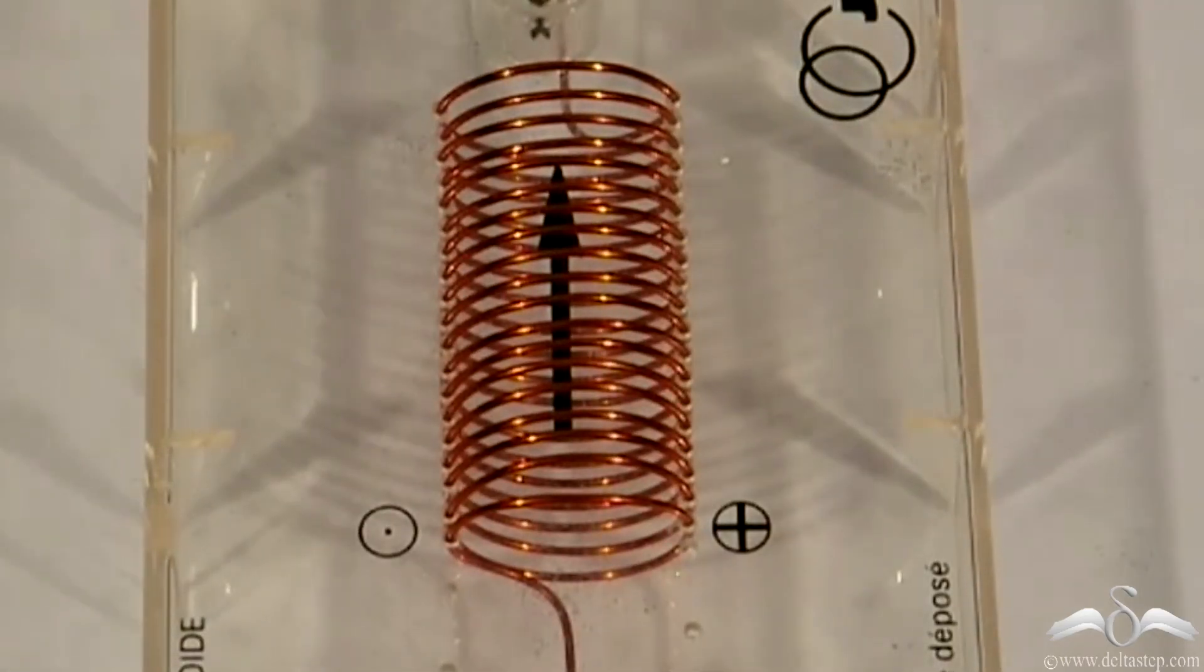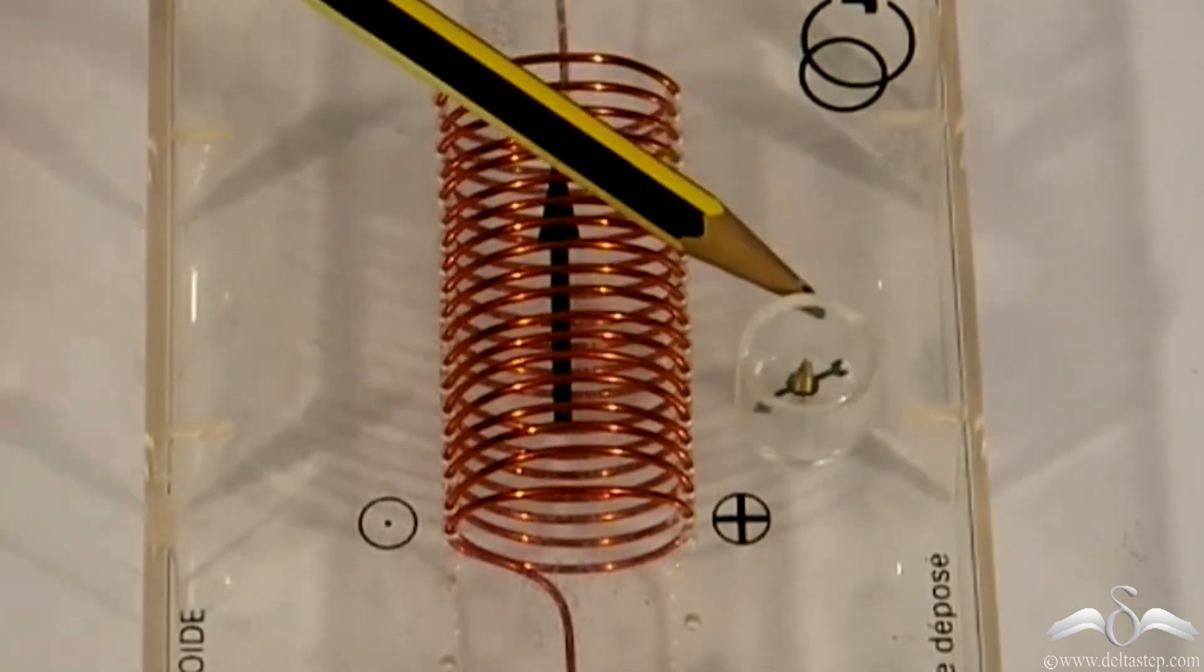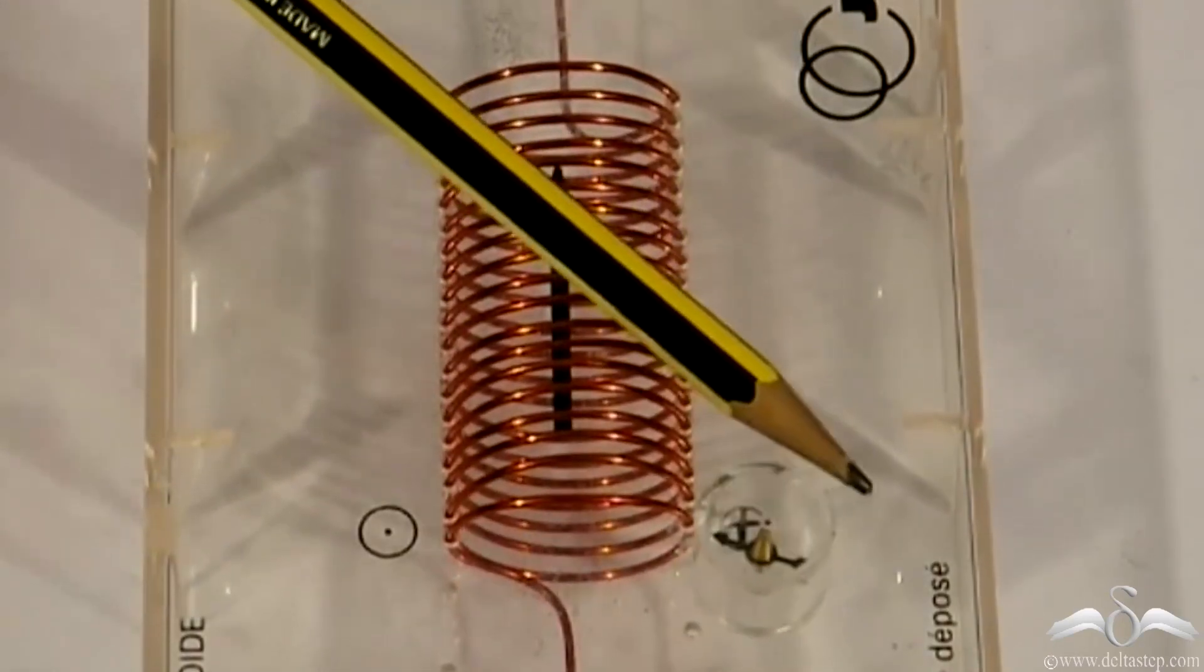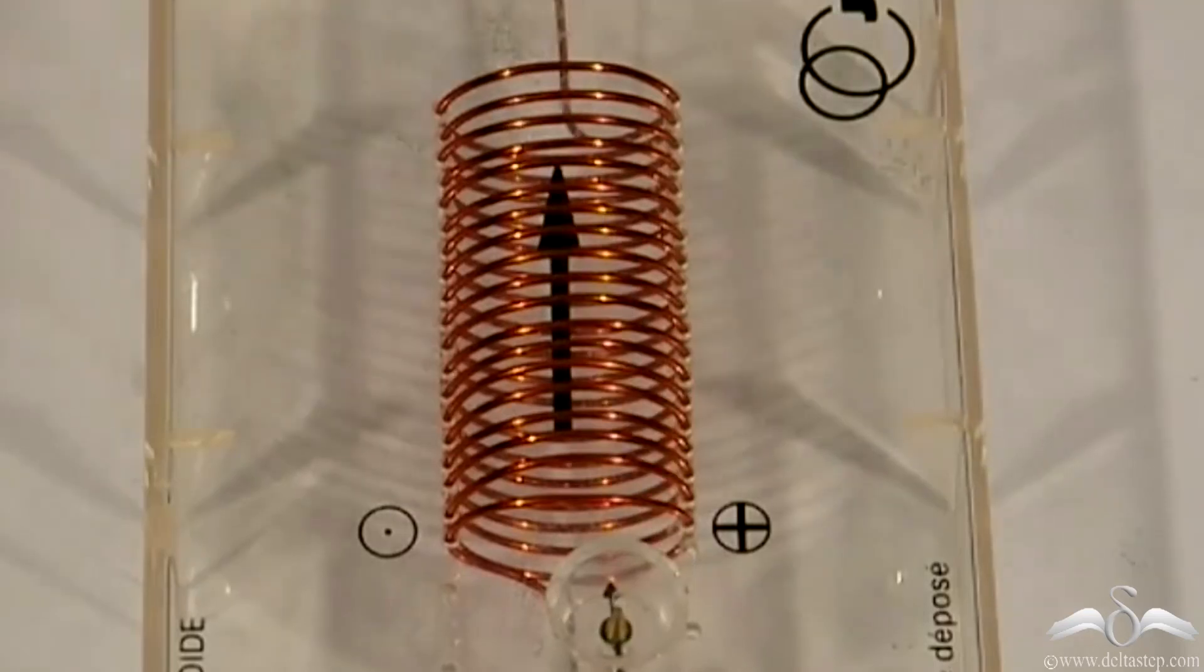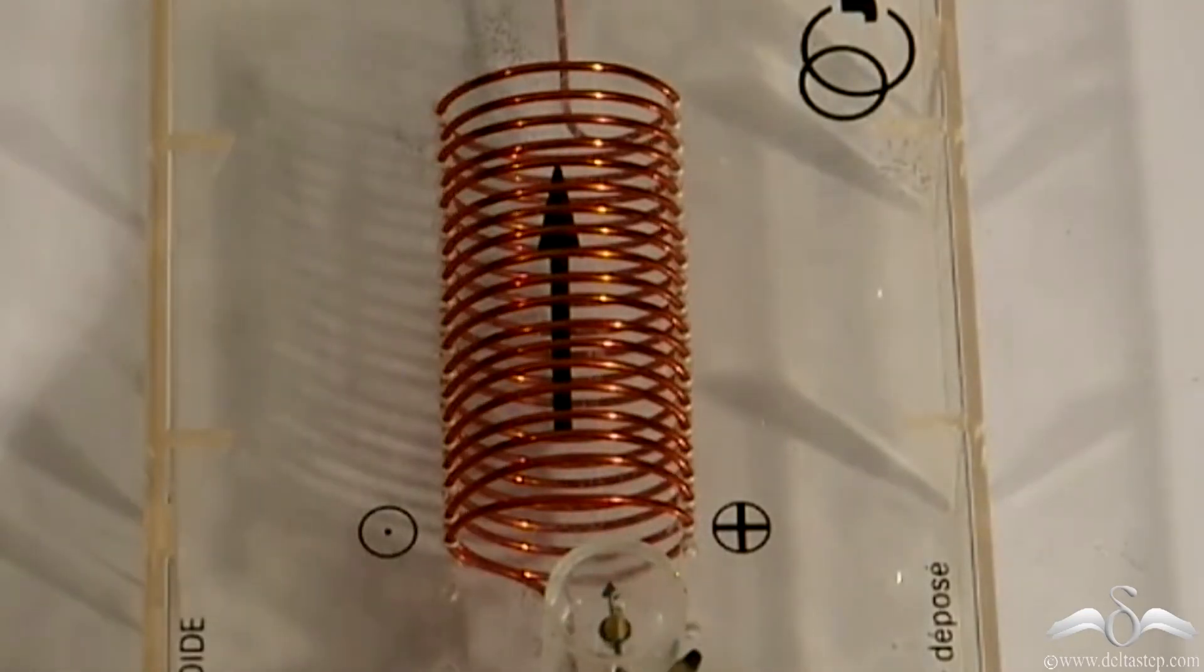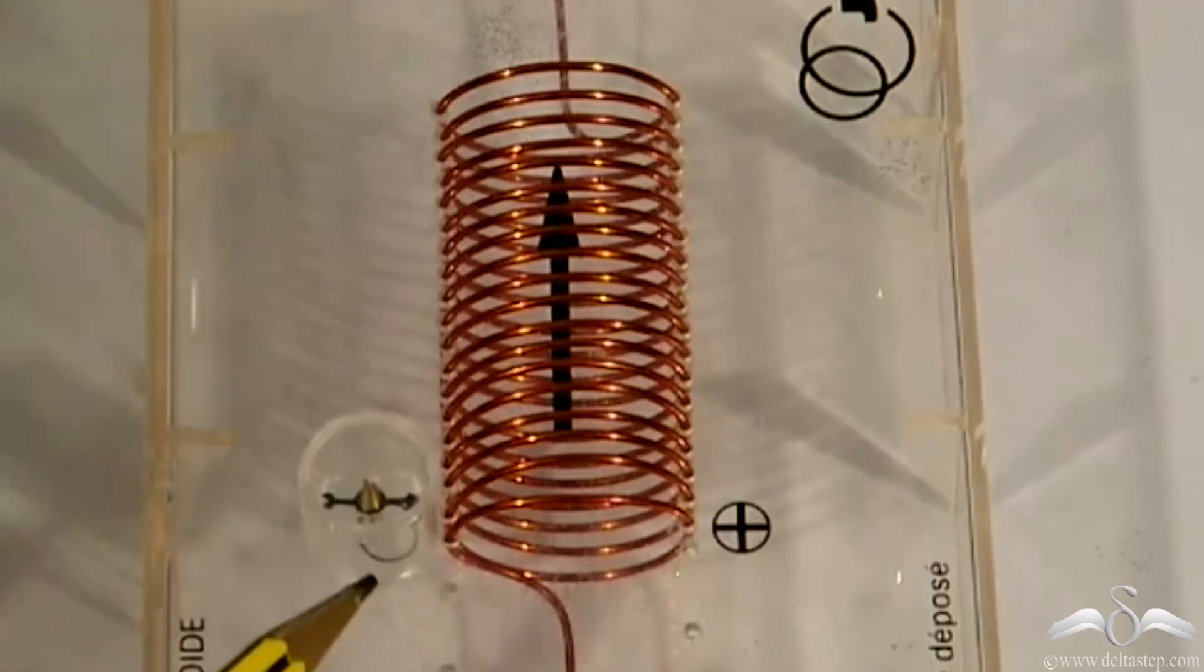This simple experiment in which we use a simple magnetic needle demonstrates the direction in which magnetic field is pointed around the current carrying solenoid. As you can see, as the needle is placed at different points around the solenoid, the deflection of the needle changes. This indicates that the needle is pointing towards the direction in which the magnetic field lines are pointing.